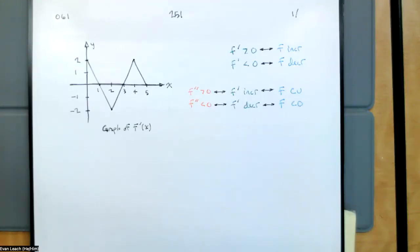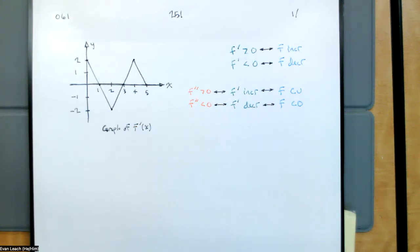If you recall last week, we started looking at the graph of f prime and seeing what it tells us about the graph of the function. The big thing that we came across was that if the derivative is positive, then the function is increasing. If the derivative is negative, then the function is decreasing. That is, the sign of the derivative tells us about the direction of the function.